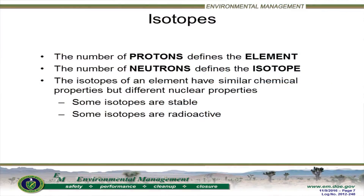This is fundamental — we have to understand it to understand radiation. The number of protons defines the element. If you have five protons, it's always going to be the same element. However, if the number of neutrons differs, then it's an isotope of that same element.